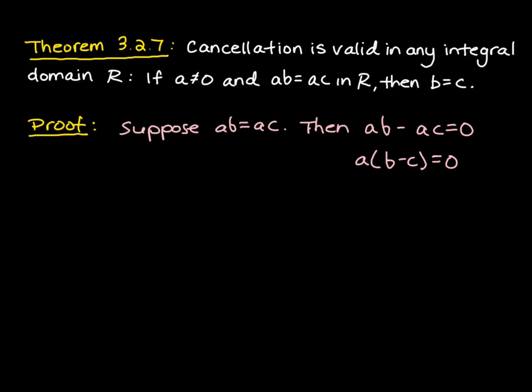Now we know that this is an integral domain. So what does that tell us? Because it tells us that a has to equal zero or b minus c has to equal zero. Those are our two options.